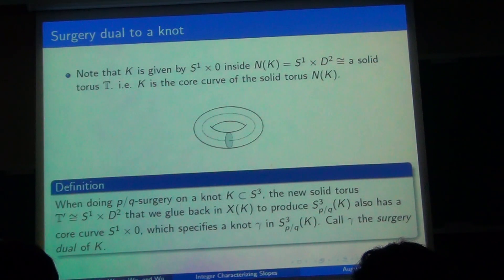And now we're ready to introduce the surgery dual knot. Naturally, K is just like the core of its tubular neighborhood. But when we do p/q surgery on K, the new solid torus that we glue back in the manner specified by p/q has a core. And that determines the new knot γ in the surgery manifold, which we call the surgery dual of K.